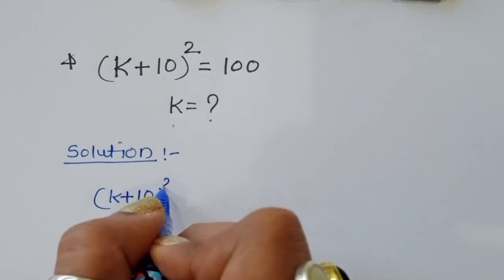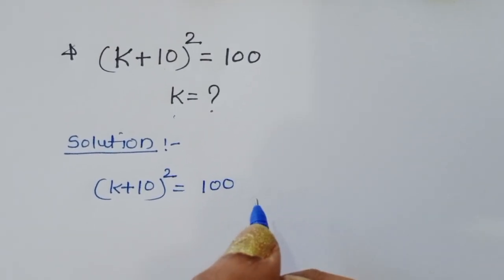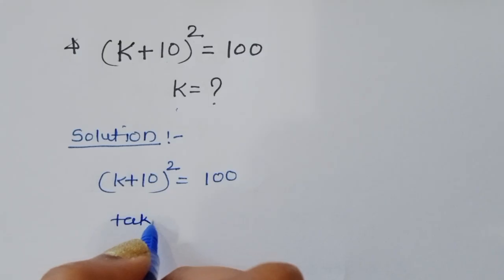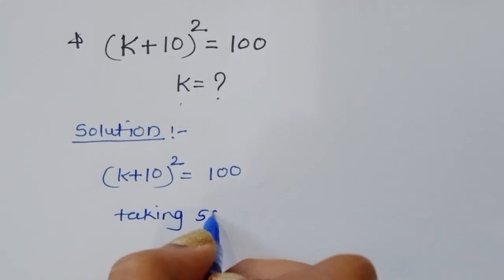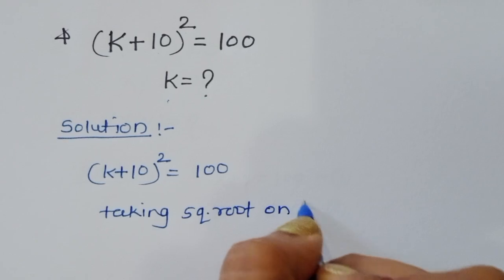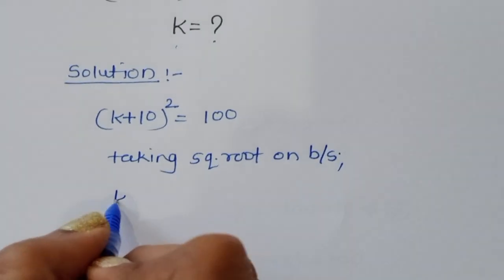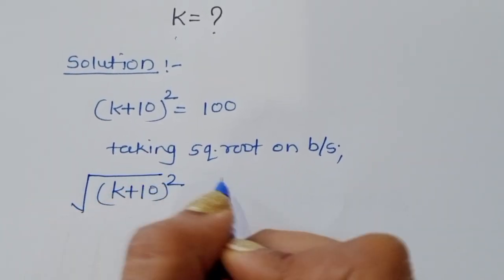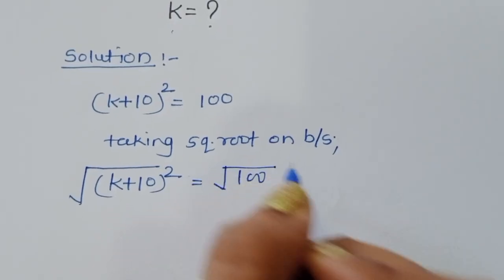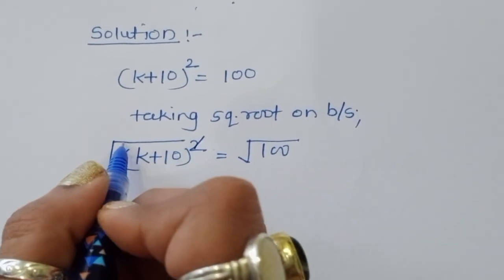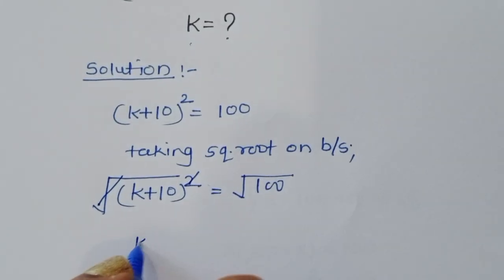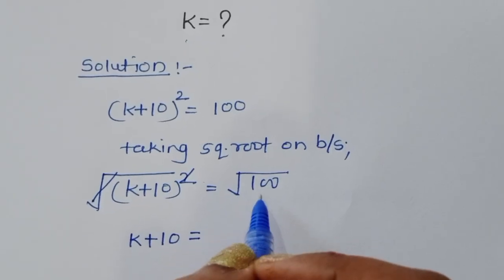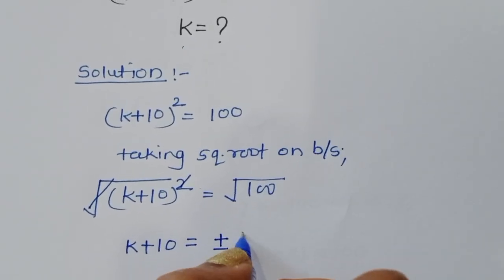So (k + 10)² = 100 is the given question. Since this is a square, we can take the square root on both sides. Taking square root on both sides, the square and square root cancel, giving us k + 10 = ±√100, which is ±10.